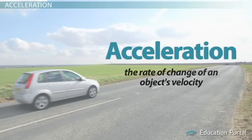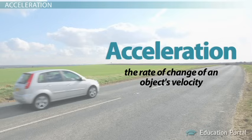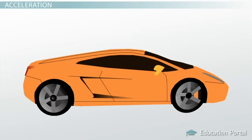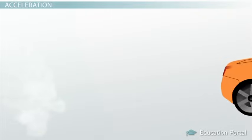Acceleration is the rate of change of an object's velocity. Remember, velocity is how fast an object is moving in a specific direction. So acceleration measures how fast the velocity changes. We can calculate acceleration if we know the total change in velocity and the time it takes for the velocity to change.